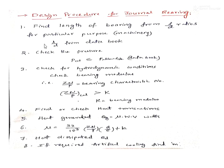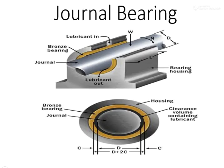Here we are going to see the design procedure of journal bearing. A journal bearing is a sliding contact bearing fitted in the bearing housing or bearing frame, through which a shaft passes. The bearing and shaft (also called the journal) are separated by a thin film of lubrication, which is poured through a lubricating hole in the bearing.